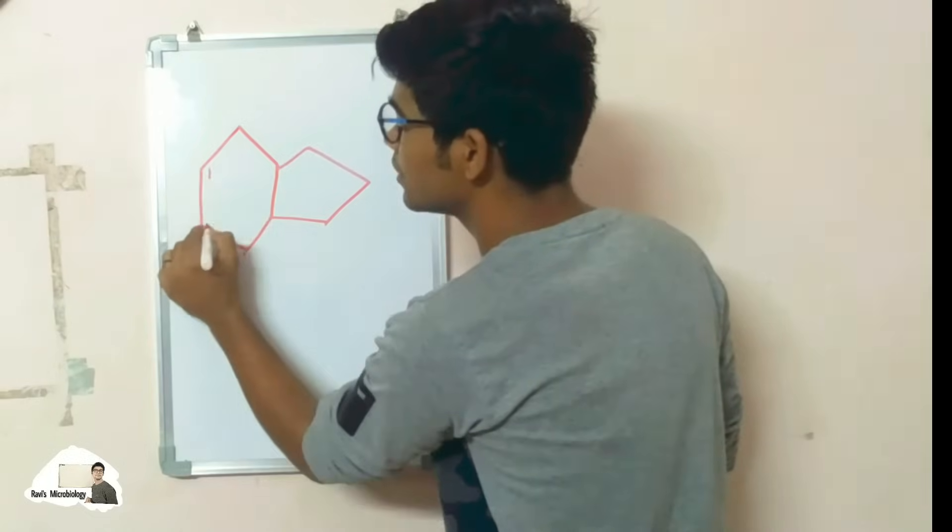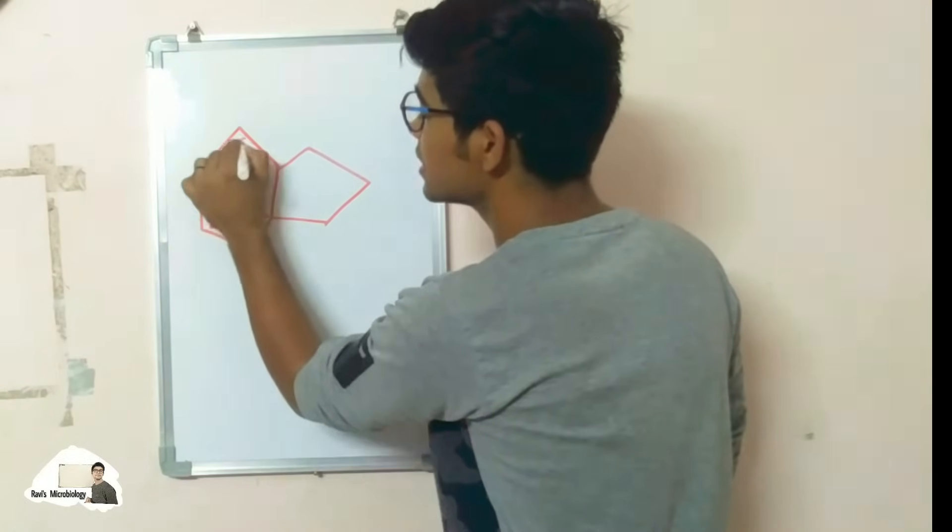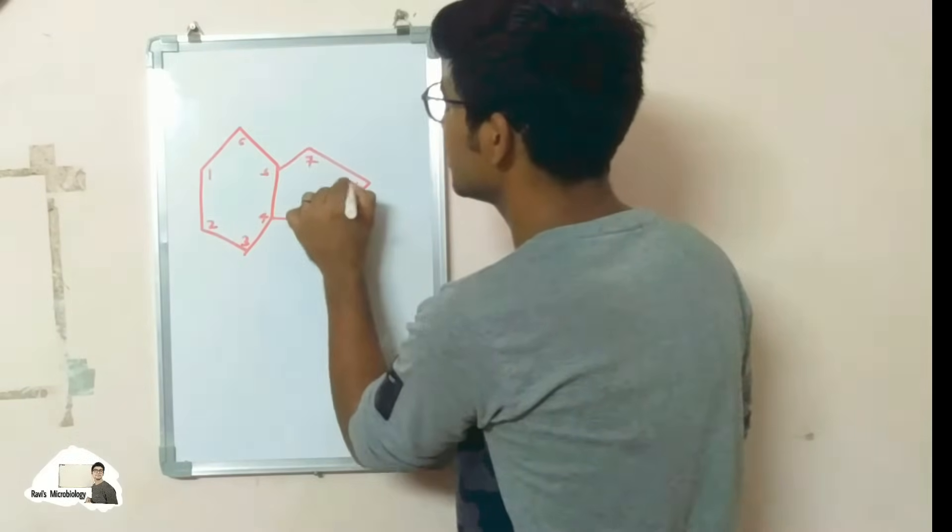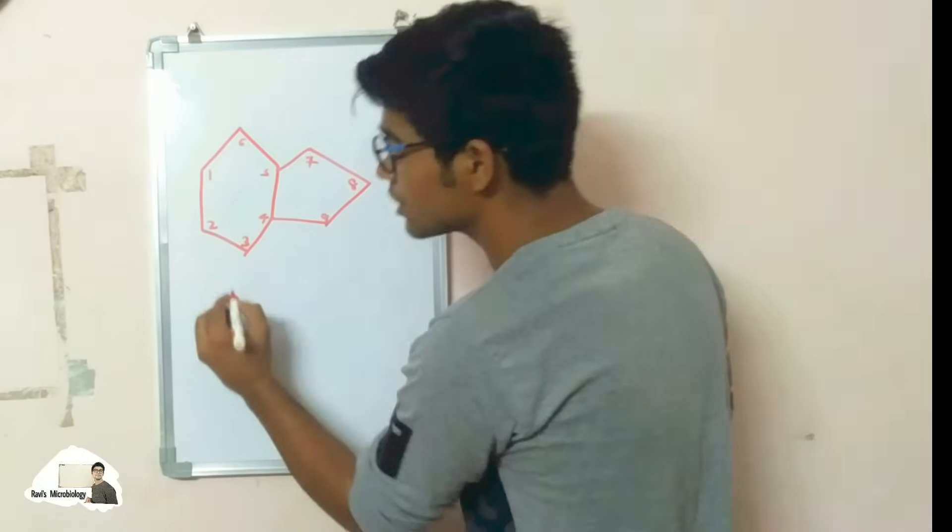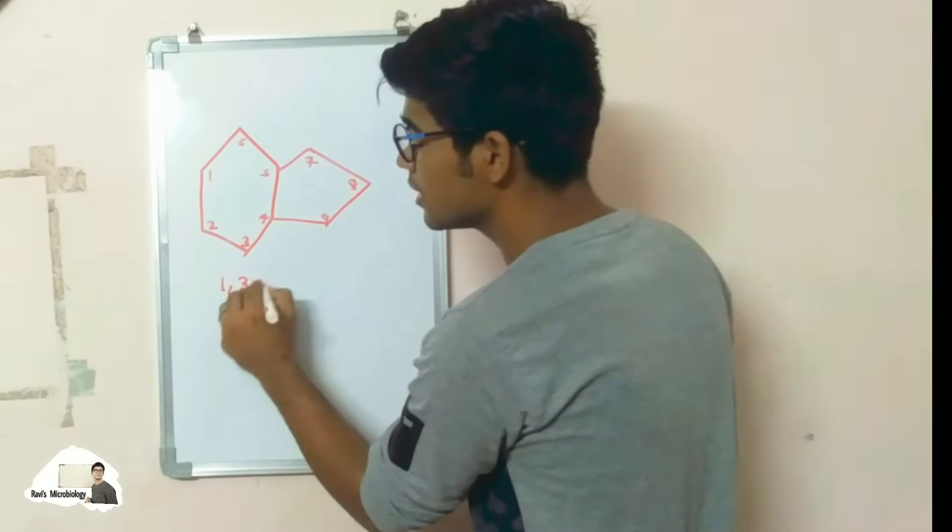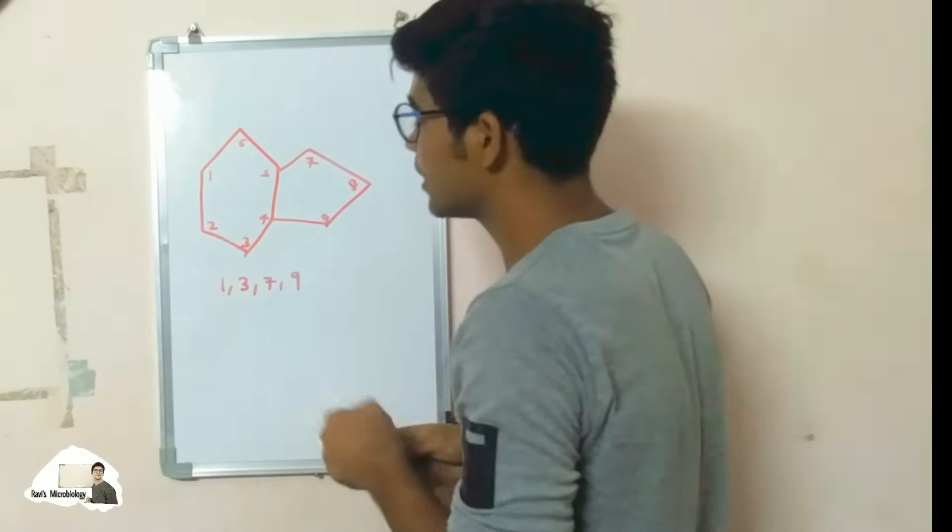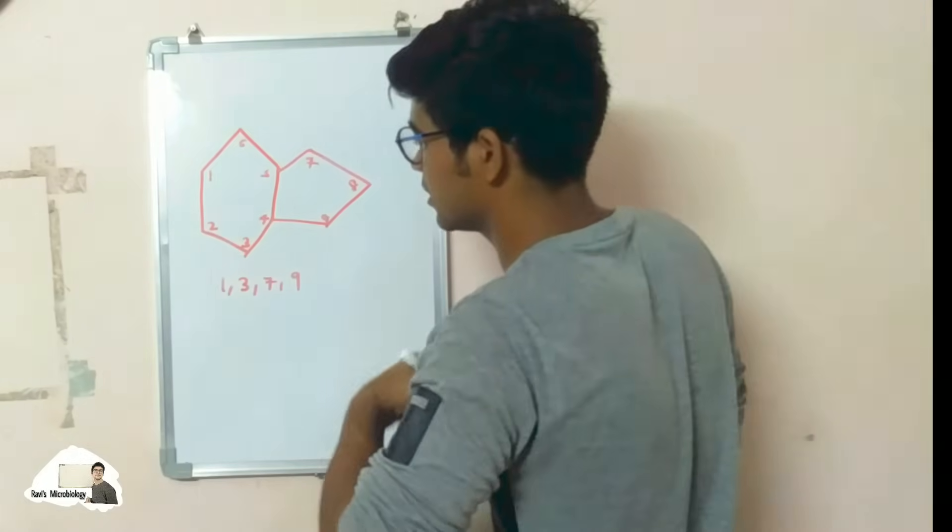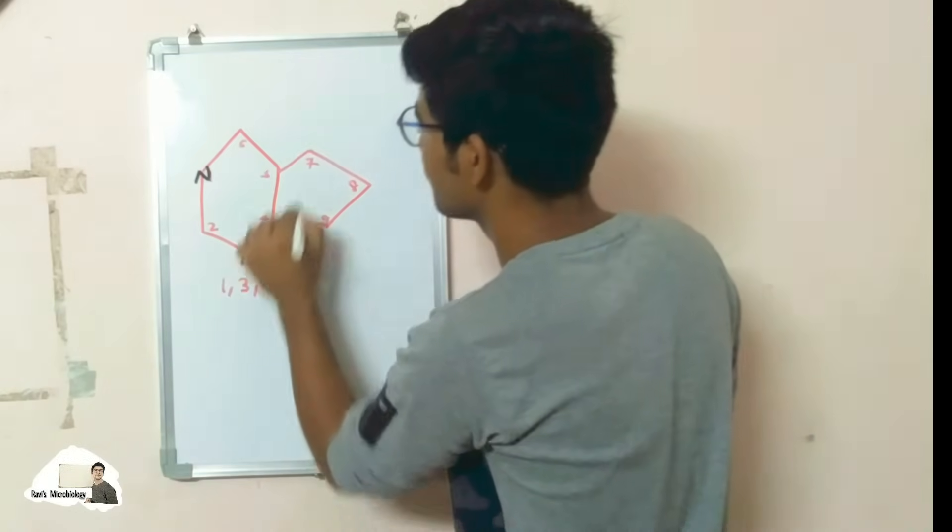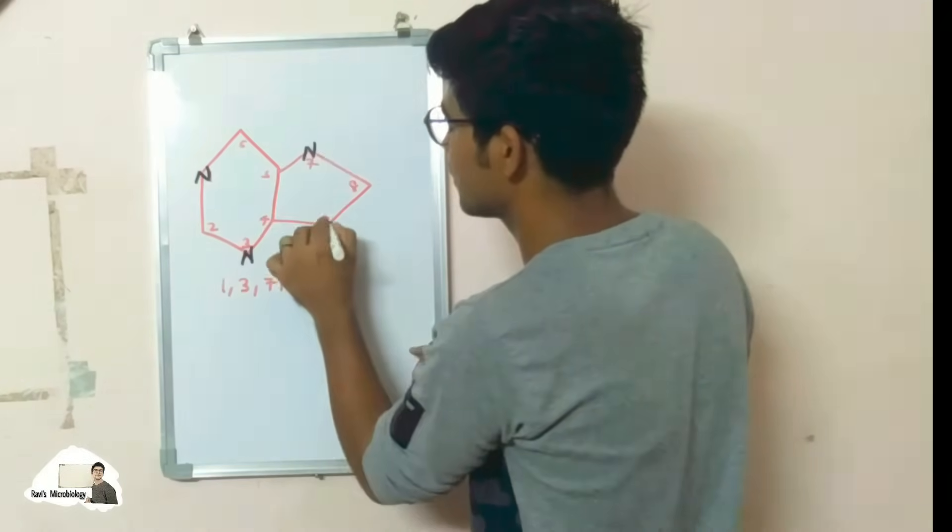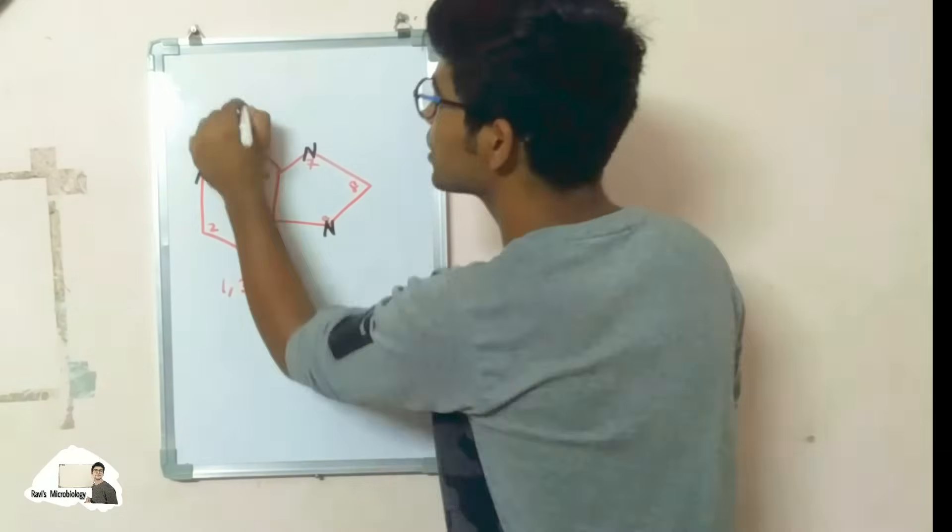Give the numbers one, two, three, four, five, six, seven, eight, and nine. Now place nitrogen at one, three, seven, and nine positions. So it forms like this. So this is the basic structure of the purines.